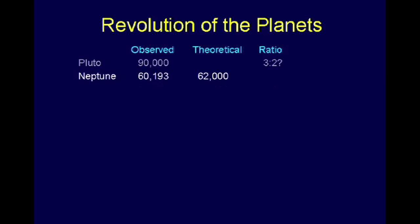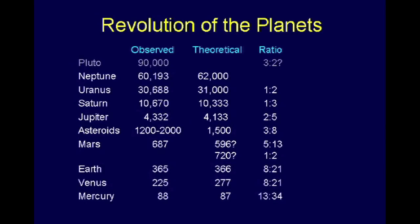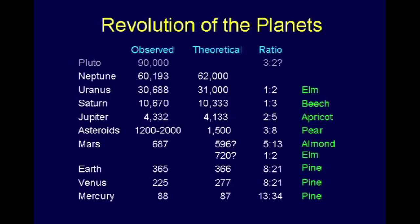Here's the one that blew me away. If you look at the revolution of the planets in our solar system — Neptune, Uranus, Saturn, Jupiter, the asteroid belt, Mars, Earth, Venus, and Mercury — if you adjust the observed orbits just slightly to theoretical orbits, each one is a Fibonacci ratio to the previous one. Pluto is too, but in an inverse way, since it's 90,000 miles against Neptune's 60,000, so that's a three-to-two relationship. Interestingly, these are the same ratios you find in the elm, the beech, the apricot, the pear, the almond, and the pine.